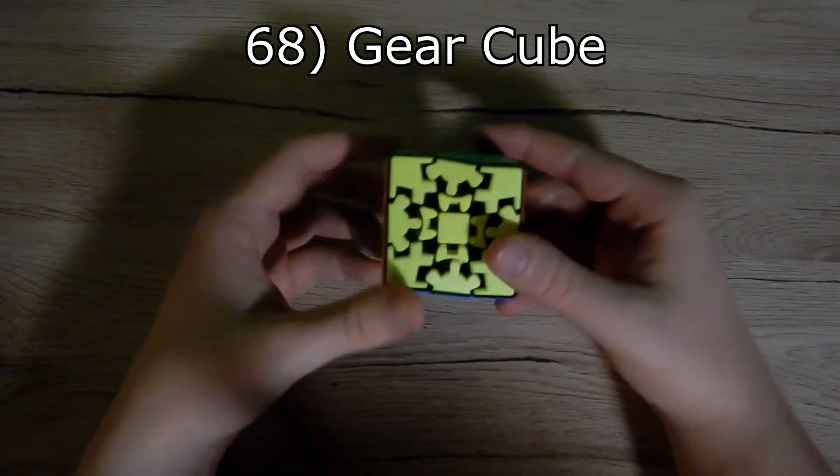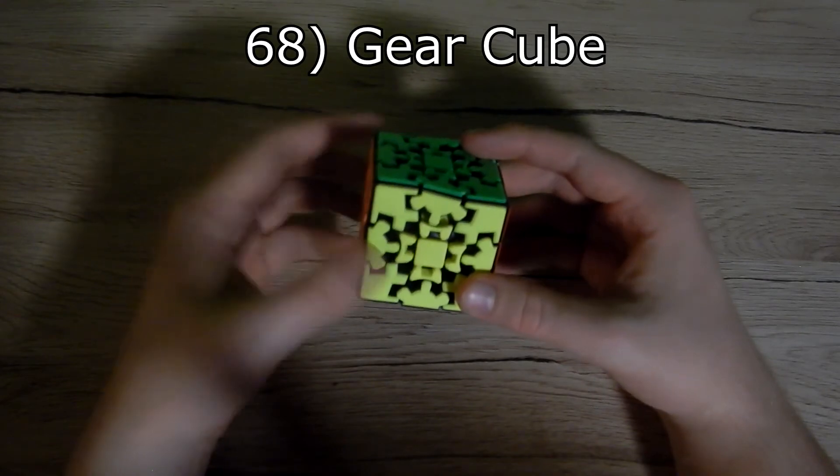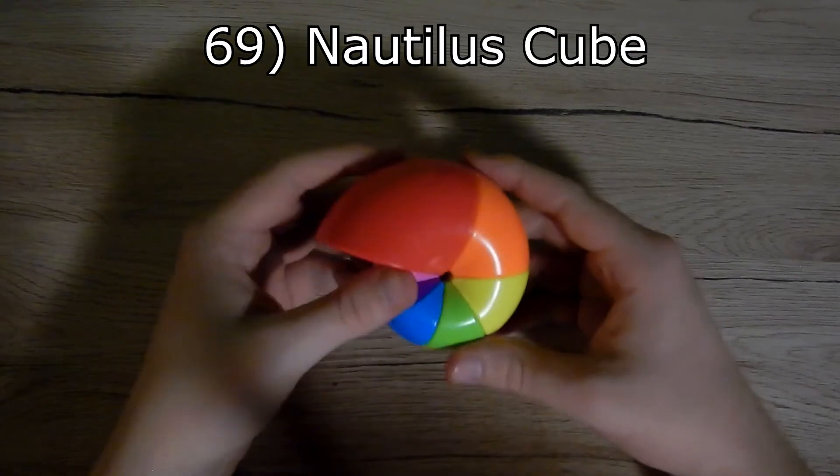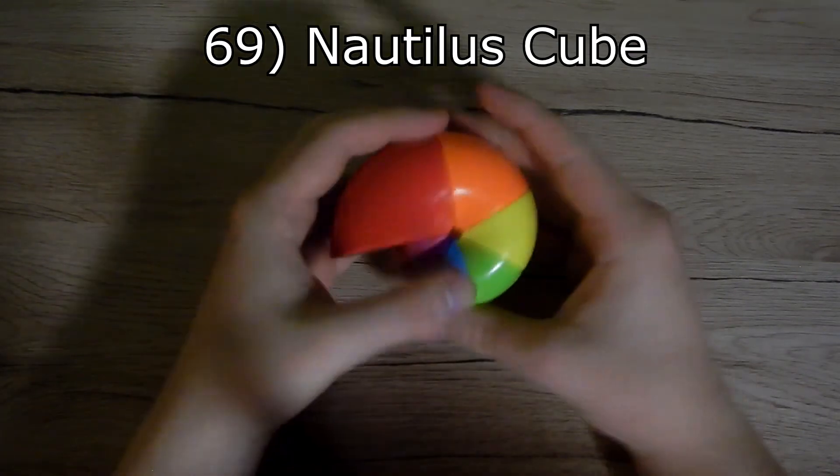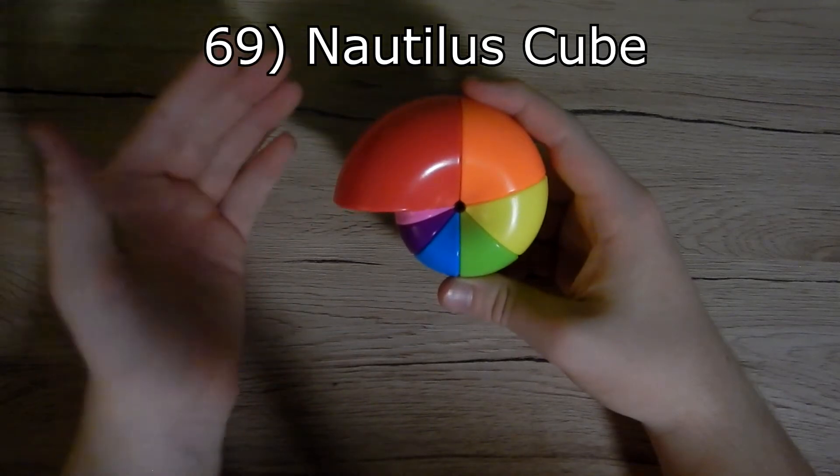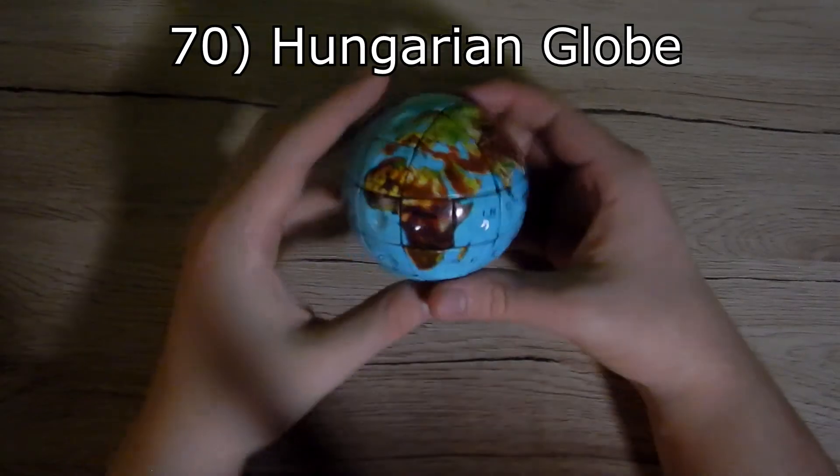Next we have another cube. It is a bandaged square-1, but every puzzle bandaged is harder. But this one is easier than the original.